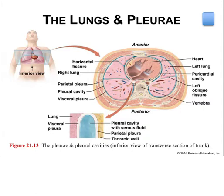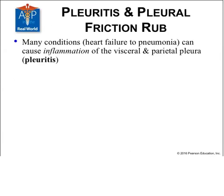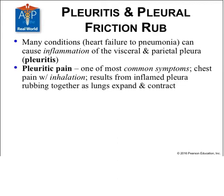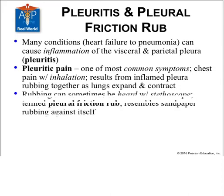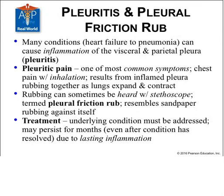All internal organs are covered by a serous membrane that secretes a lubricating fluid so that internal movement does not irritate, inflame, and scar the structures. A condition known as pleurisy is the result of a lack of pleural fluid production that generates painful ventilation. Many conditions from heart failure to pneumonia can cause inflammation of the visceral and parietal pleura. Pleuritic pain is chest pain upon inhalation that results from the inflamed pleura rubbing together as the lungs expand and contract—this rubbing can sometimes be heard with a stethoscope, termed the pleural friction rub, and it sounds like sandpaper. Treatment must address the underlying condition and may persist for months even after it resolves due to lasting inflammation. Causes include viral infection, bacterial infection, trauma, and any number of other conditions.